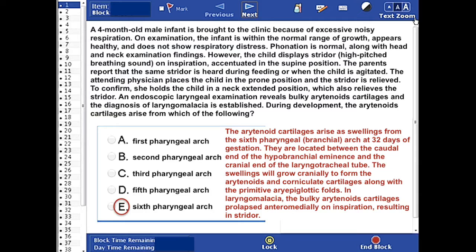They are located between the caudal end of the hypobranchial eminence and the cranial end of the laryngotracheal tube. The swellings will grow cranially to form the arytenoids and corniculate cartilages, along with the primitive aryepiglottic folds.